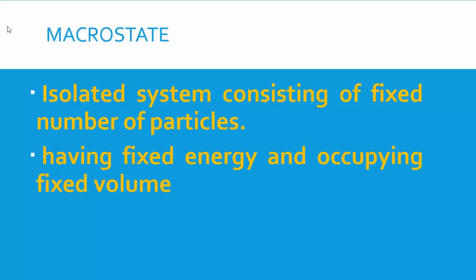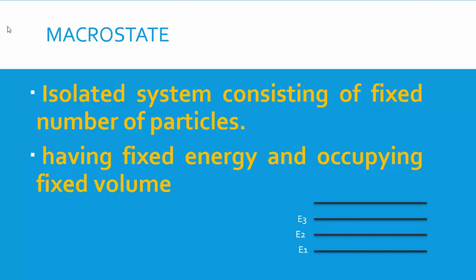For macrostate: in a system or container you have a large number of particles, and these particles will have different energy levels. The particle occupies a fixed volume. So when you have the number of particles enclosed in a container having fixed volume and fixed number of energies, where the particles are distributed in the fixed volume of the container, that information is called macrostate.